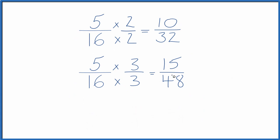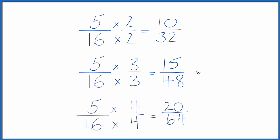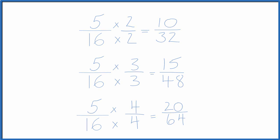One last one. We multiply by 4 over 4, which is just 1. We get 20 sixty-fourths, which is yet another equivalent fraction for 5 sixteenths. This is Dr. B — thanks for watching.